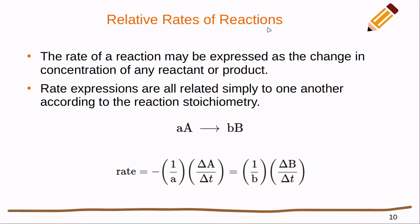Let's talk about how we do relative rates, because what we want to be able to do is write rate expressions for any one of the components in our reaction. The rate of a reaction may be expressed as a change in concentration of any reactant or product. The rate expressions are related simply to one another according to reaction stoichiometry, so we have to come back to the stoichiometry here.